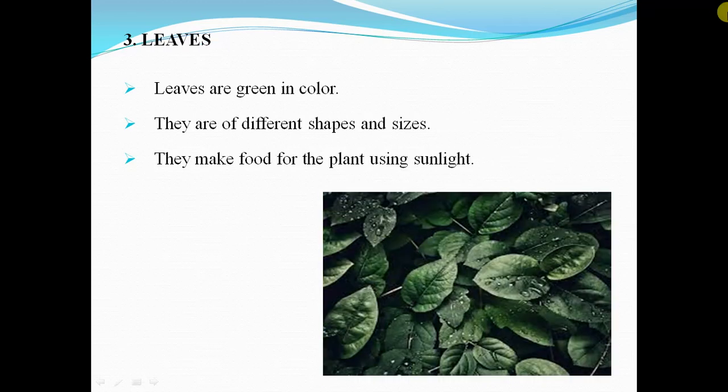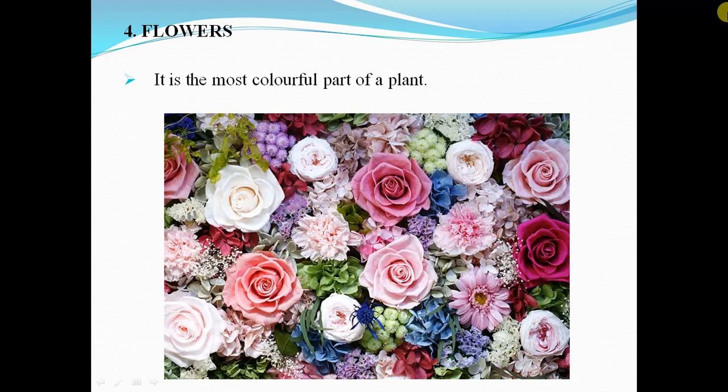Leaves. Leaves are green in color. They are of different shapes and sizes. They make food for the plant using sunlight. You can see the picture of leaves.